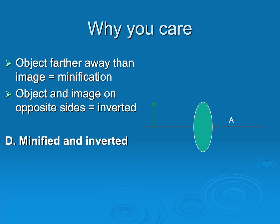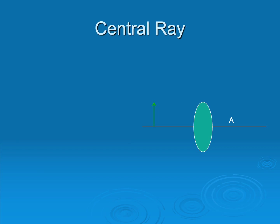If you couldn't remember those laws, you could do what's called a central ray. To draw a central ray, draw a ray starting at the top of your object through the middle of the lens, then draw your image at the image position. There are a few rules: the base of the object is on a reference line, so the base of the image must be on that same reference line, and the central ray must touch the top of the image. There's only one way to draw it obeying both rules.